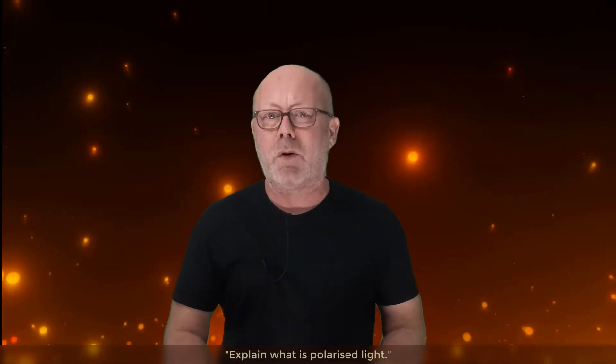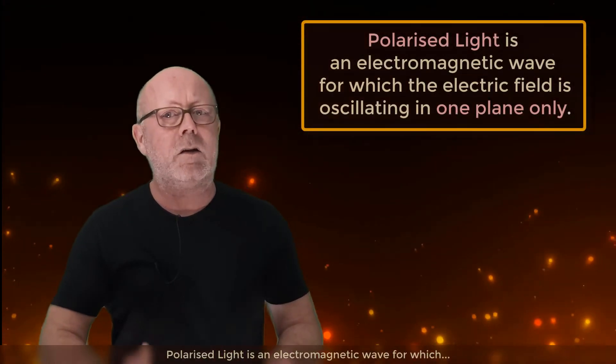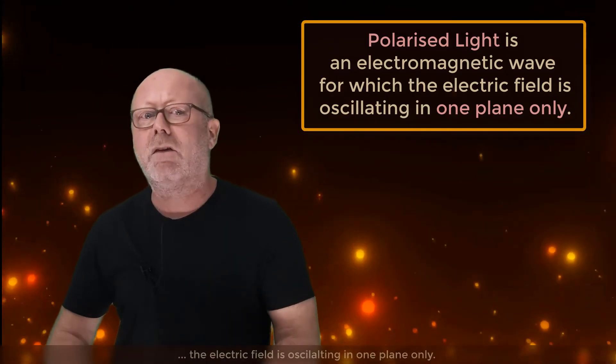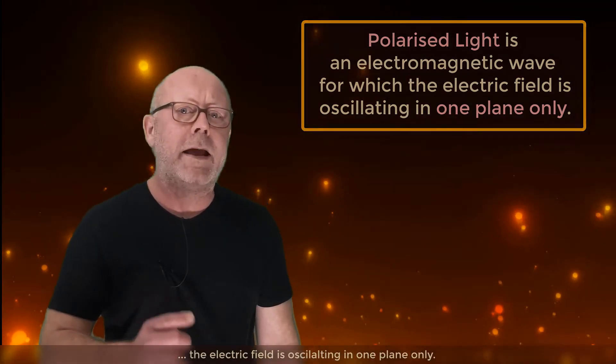Imagine yourself at an exam. You are reading the questions. Explain what is polarized light. Just answer. Polarized light is an electromagnetic wave for which the electric field is oscillating in one plane only.